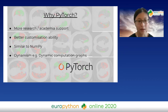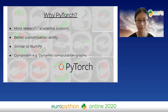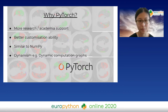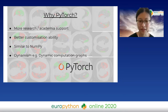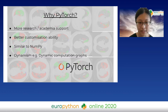Why PyTorch? Firstly, it has more research support — most state-of-the-art papers release code in PyTorch. So if you want to integrate the most updated technology into your code, PyTorch is more ideal. It also offers more customization. I also heard that TensorFlow gets a little tedious with data loaders. Additionally, PyTorch was designed with dynamism in mind, so it offers dynamic computation graphs. I heard TensorFlow 2 also has this, but I stick with PyTorch.